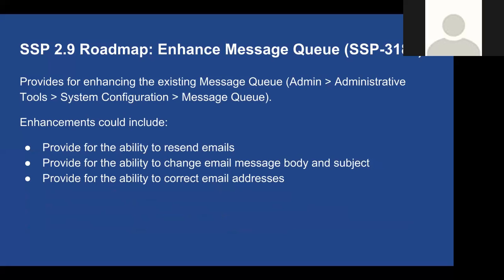The last major roadmap item is the message queue — detailed in JIRA ticket SSP-3180. There's an existing message queue; this would add improvements allowing an advisor to resend emails, change the email message body and subject, or correct an email address. Sometimes the data SSP has is outdated or there are other issues with notifications going out to students. This enhancement makes it easy to view, modify, and resend or reroute those emails as necessary.